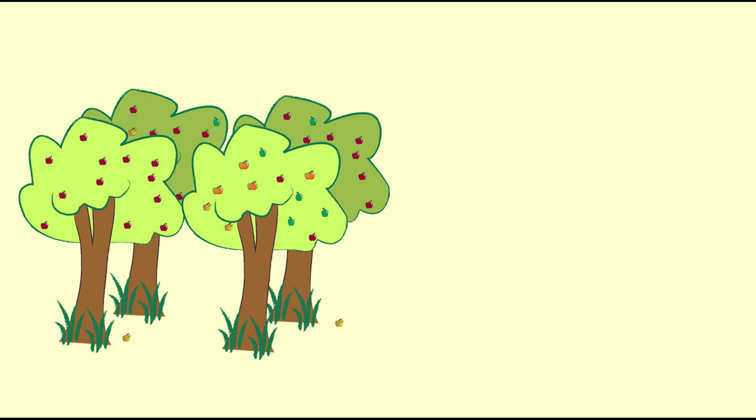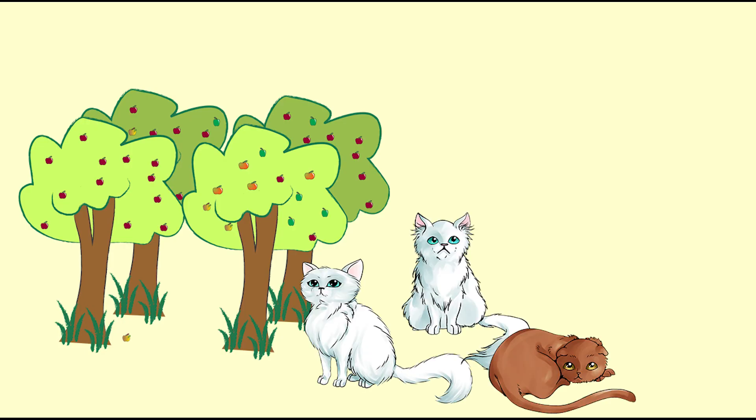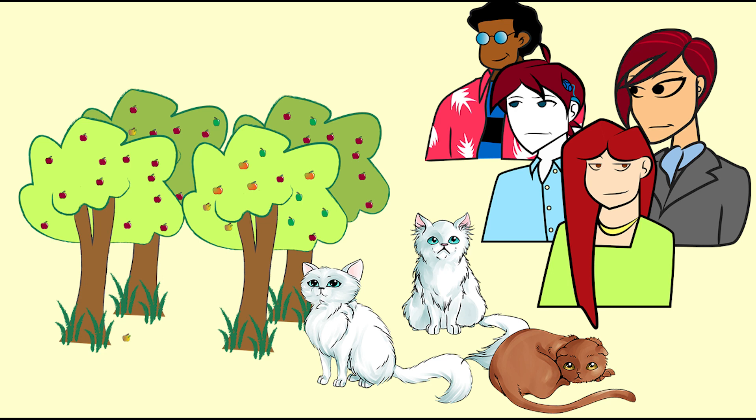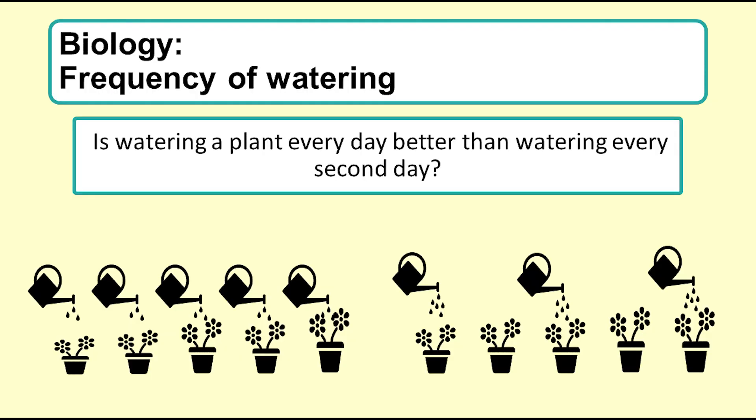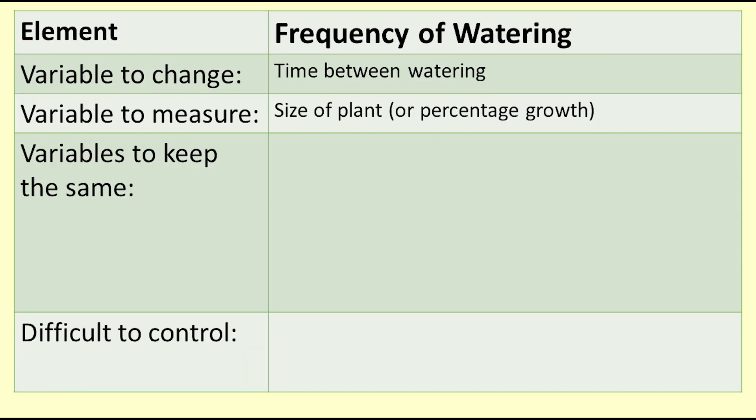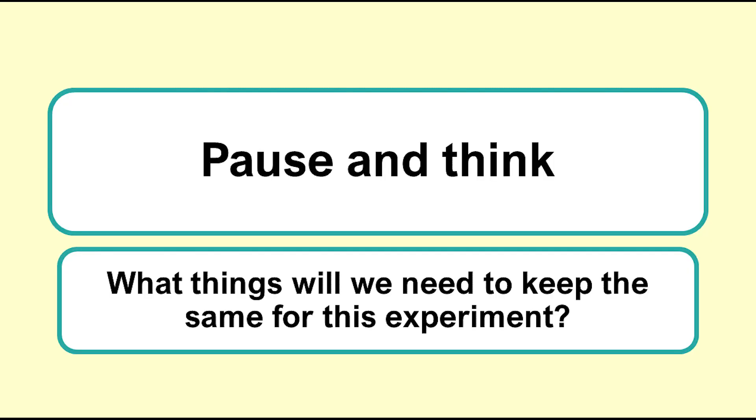In experiments with living things, such as plants, animals and people, it is much more difficult to control all aspects of the experiment. Biology experiment: frequency of watering. In this experiment, we want to find out if watering a plant every day causes the plant to grow better than watering every second day. We will alter the time between watering. We will measure how tall the plant grows over time. Pause the video and think about what things we will need to keep the same for our plant watering experiment.